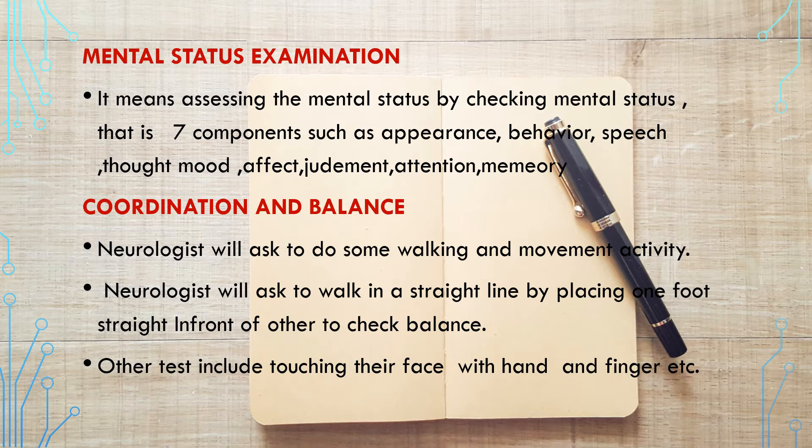The next section is coordination and balance, which is the next step of neurological examination. The neurologist will ask the patient to do some walking and movement activities — for example, walking in a straight line by placing one foot directly in front of the other to check balance. Other tests include touching their face with their hand and finger, to assess coordination and balance.